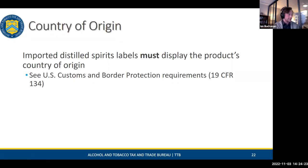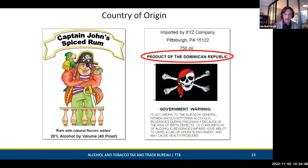For imported goods, you must display a country of origin statement. We defer to U.S. Customs and Border Protection requirements: use 'Product of [country]' or 'Produced in [nation].' This information must be displayed in English. The only exceptions are Canada, which can use the French 'Produit du Canada,' and Mexico, which can use 'Hecho en Mexico' — those are the only two that can use their native language.